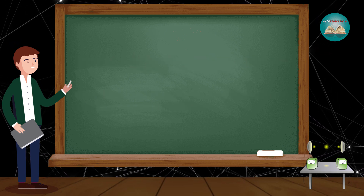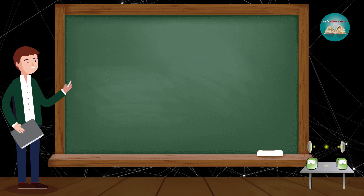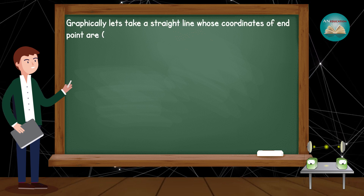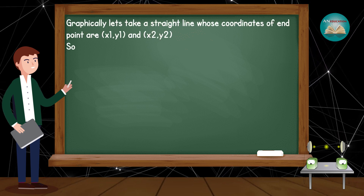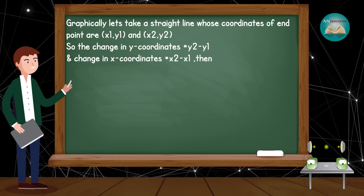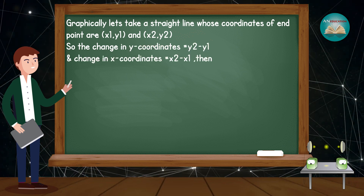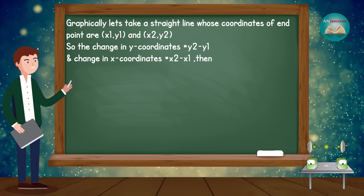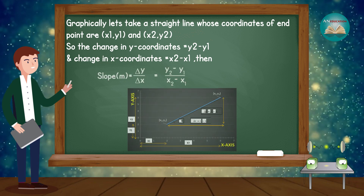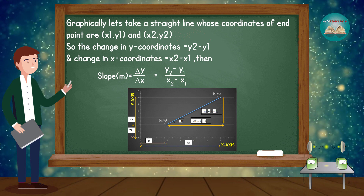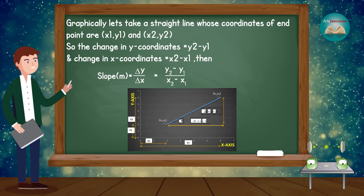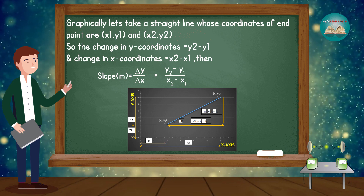Let's understand slope by the graphical method. Graphically, take a straight line whose endpoint coordinates are (x₁, y₁) and (x₂, y₂). The change in y-coordinate equals y₂ minus y₁, and the change in x-coordinate equals x₂ minus x₁. Then slope m = Δy/Δx = (y₂ − y₁) / (x₂ − x₁).